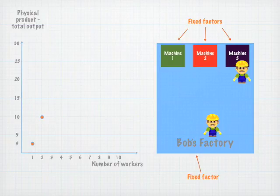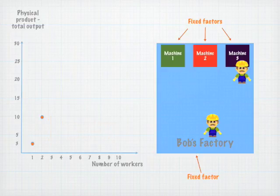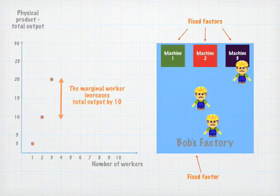This means that the marginal worker — the extra worker — increases output of the firm by seven units. Adding a third worker means that machinery is used even more efficiently. Total output increases to twenty, meaning that the marginal worker increases output by ten.